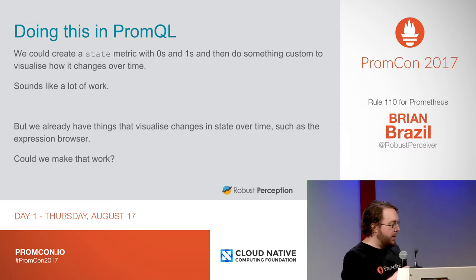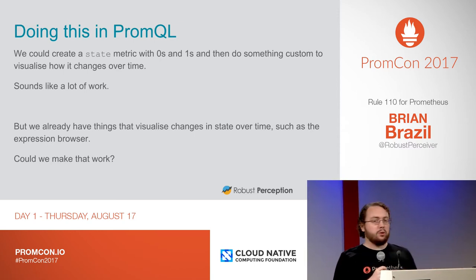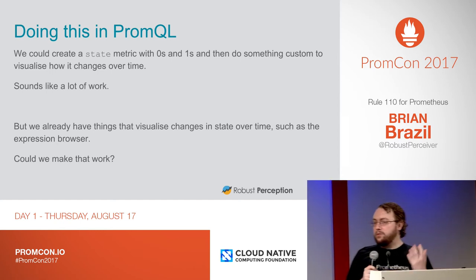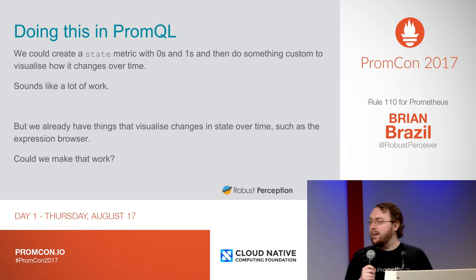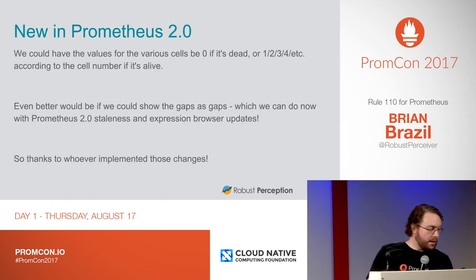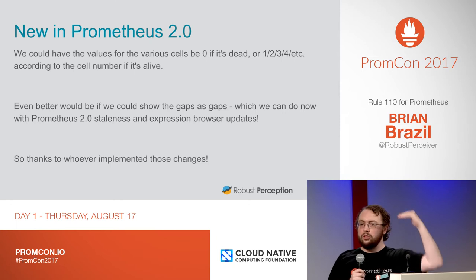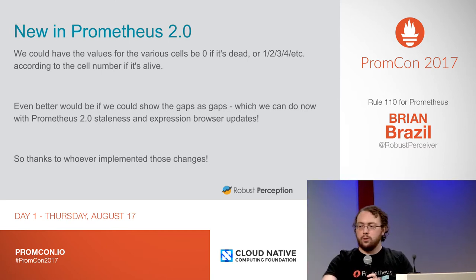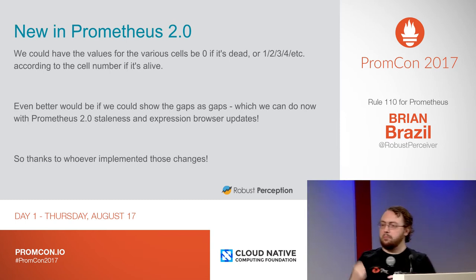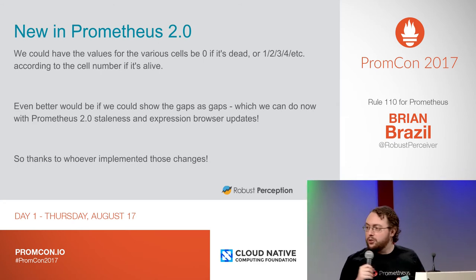So how would we implement this in PromQL? We could create a state with ones and zeros, do something custom to visualize changes over time, use console templates again — but that's kind of been done and it sounds like a lot of work. But we already have things in Prometheus that visualize the state of things changing over time, like the expression browser in Grafana. So could we use that instead? In Prometheus 2.0, we could have the values of various cells be 0, 1, 2, 3, 4, and so on to represent the actual height. It'd be nice if gaps were represented as gaps, and with Prometheus 2.0's staleness and changes in the expression browser, we can do that. Thanks very much to whoever implemented that and is talking about it tomorrow.